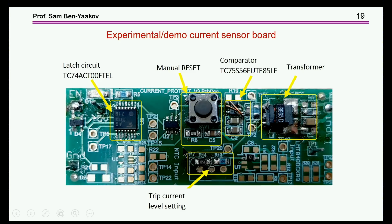A photo is shown of a test unit built for testing the concept. It includes the transformer, a comparator, and a latch for latching the circuit when a fault occurs. It has a means of adjusting the trip current level, a provision for an NTC thermistor to compensate for the change in RDS(on) as the silicon transistor temperature changes, and a manual reset to restore operation after the latch turns off the unit.